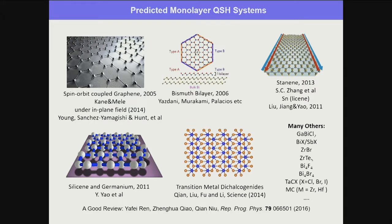Now you have two ways to choose which 2D crystals to study. The first way is to just ask Liang — perhaps the most reliable way, though he's quite busy. So you should develop some intuition first. There are many predicted monolayer quantum spin Hall systems — really a lot — and the number is still growing. I list many here to show you the diversity.